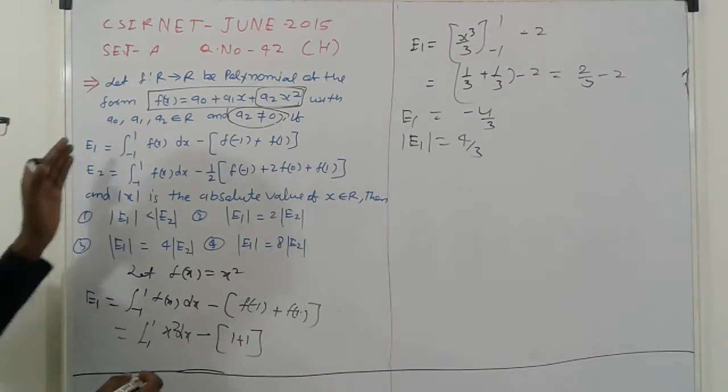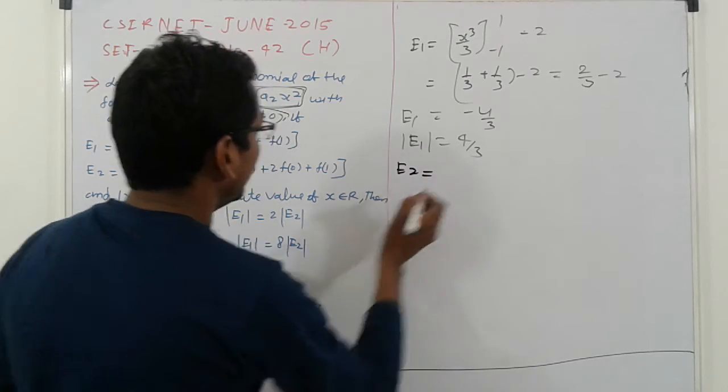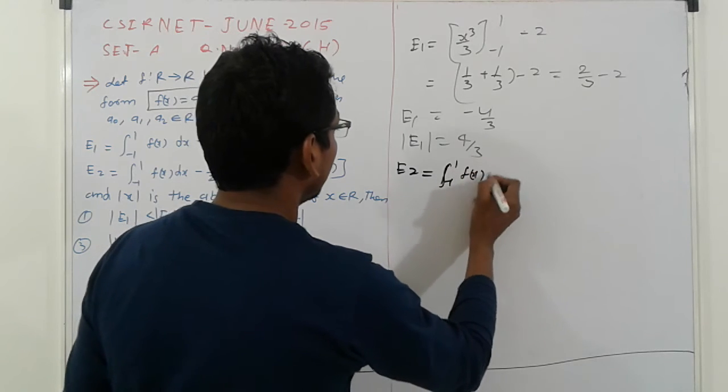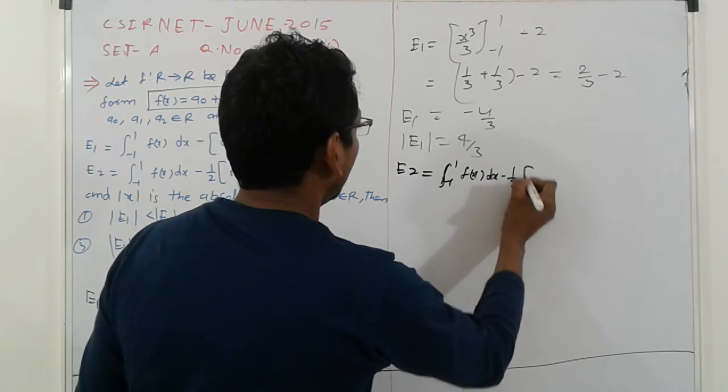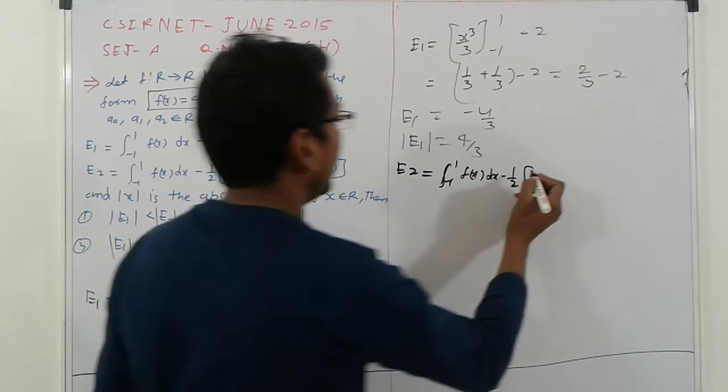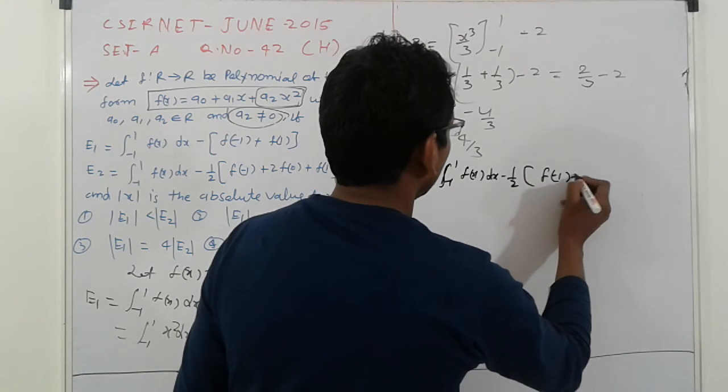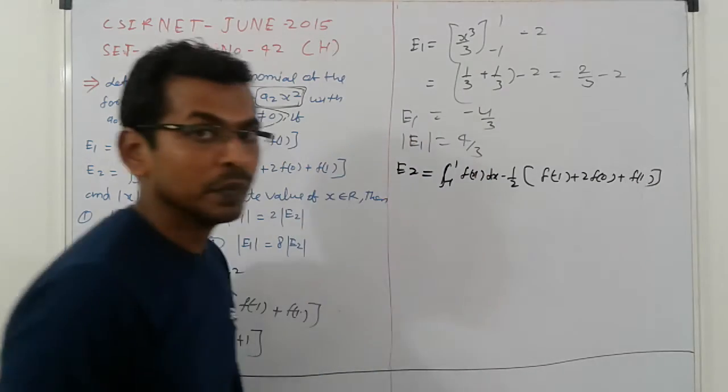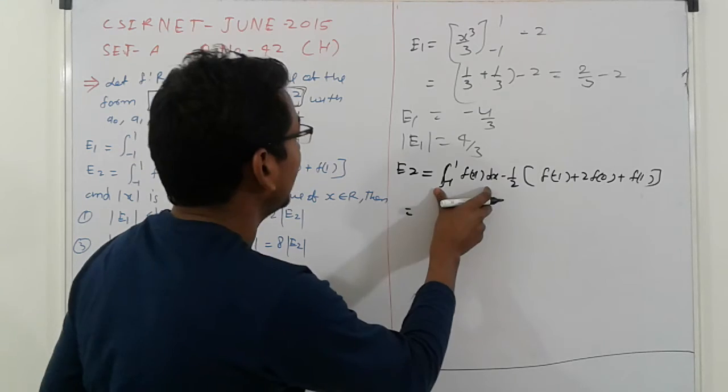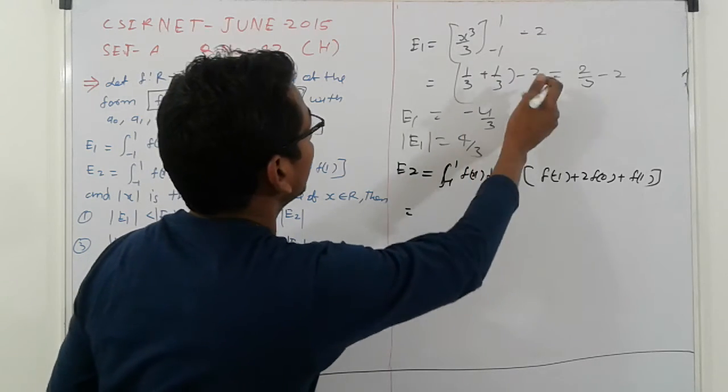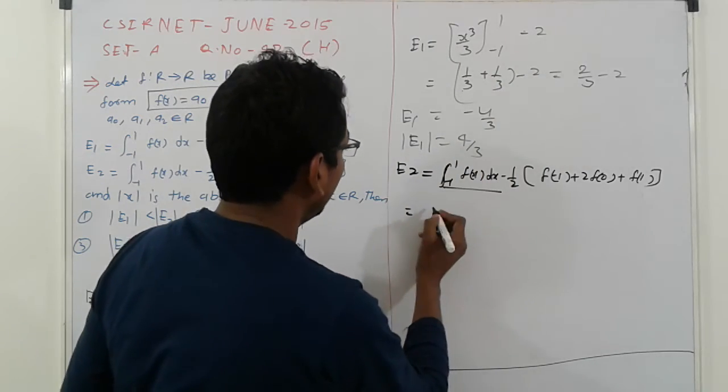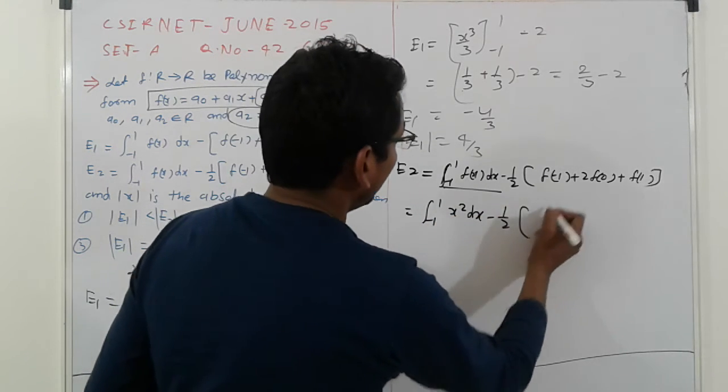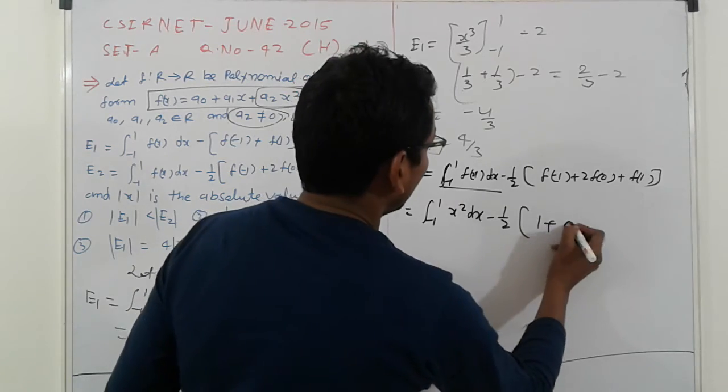Next similarly find out E2. E2 equals integral -1 to 1 f(x)dx minus 1/2 times [f(-1) plus 2f(0) plus f(1)]. Simplify this: integral -1 to 1 x squared dx minus 1/2 times [1 plus 0 plus 1].